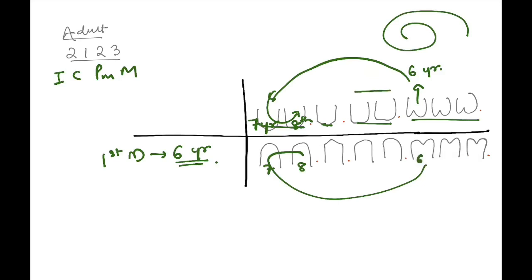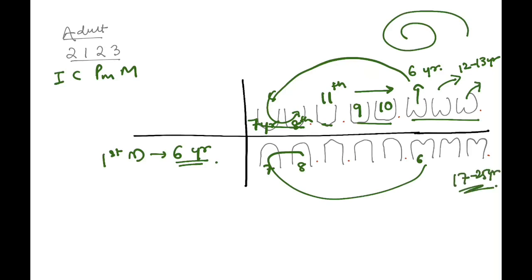Proceeding with the two premolars after eight years — these are the ninth and tenth year teeth. Before coming out of the spiral and going to the lateral-most molars, there is the canine in between, which erupts at eleven years. Now out of the spiral: the second molar erupts at twelve to thirteen years, and the third molar erupts at seventeen to twenty-five years.